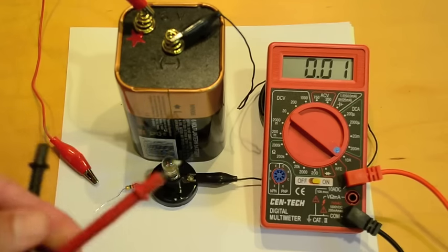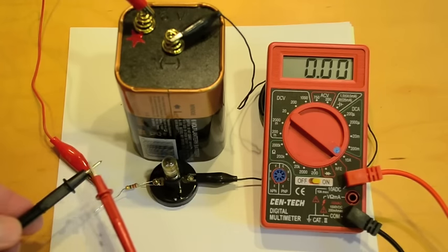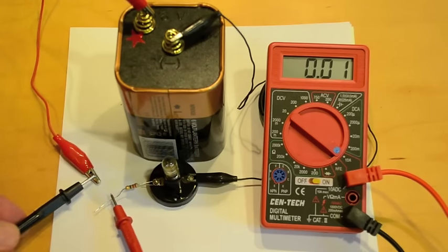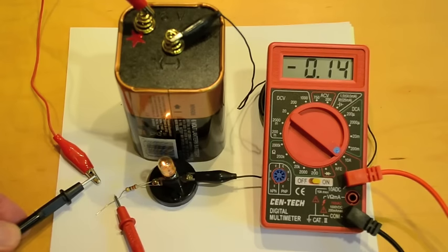And again if I have the lead going this way, if I put the black lead on the more positive end and the red lead on the more negative, the circuit works. But I get a negative reading on the current. So that just kind of tells you which way the current is flowing.